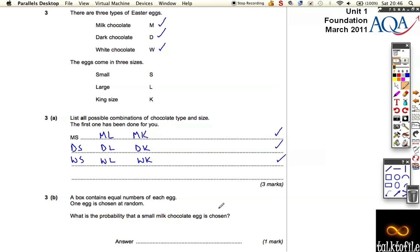What's the probability that a small milk chocolate egg is chosen? A small milk chocolate egg is just one out of the possible nine combinations we've got. Out of the possible nine things in the box, only one of them, so it's just one-ninth.